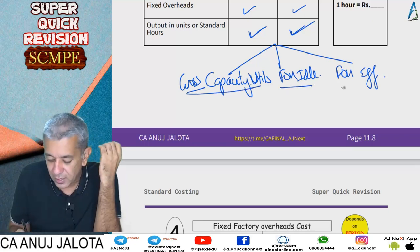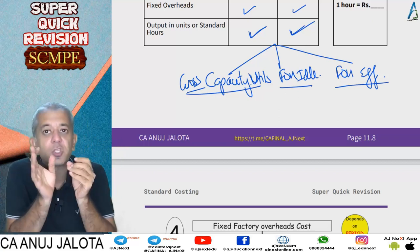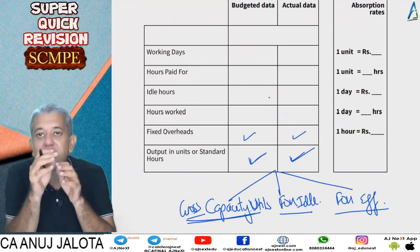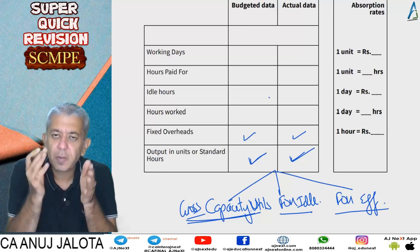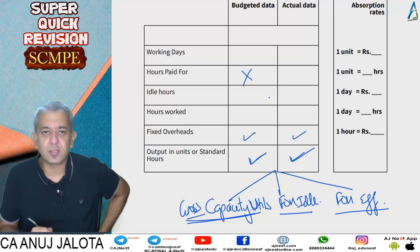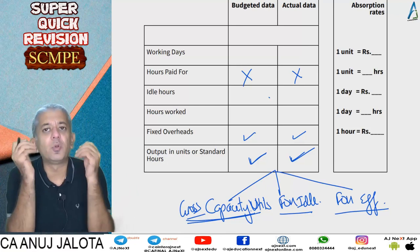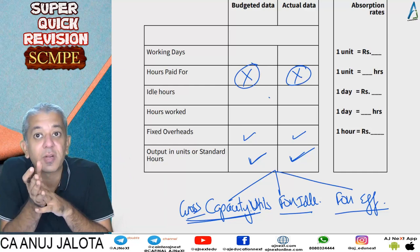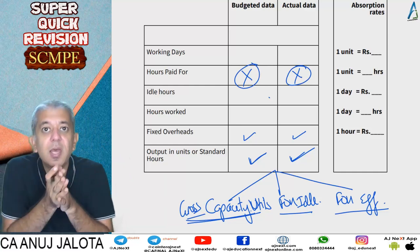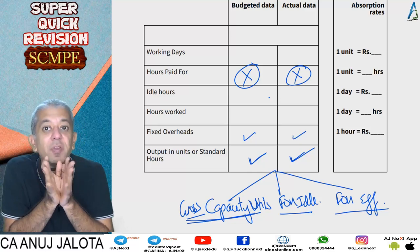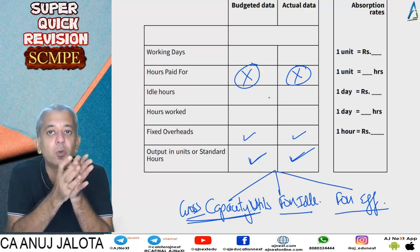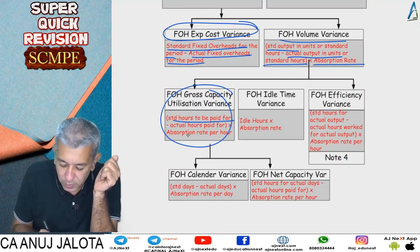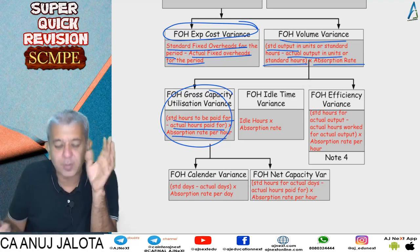Gross capacity utilization variance: workers should have come for a certain number of hours but actually came for a different number. If workers come for more hours, they produce more units, fixed overheads per unit fall, and variance is favorable. Formula: standard hours to be paid for minus actual hours paid for, multiplied by absorption rate per hour.